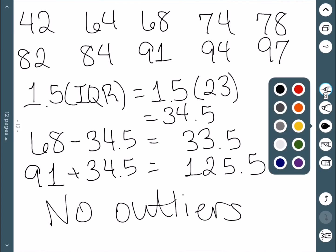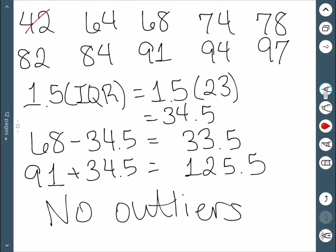If, however, this student that made a 42 would have instead made something like a 32, that would now be an outlier since it's below our lower limit.